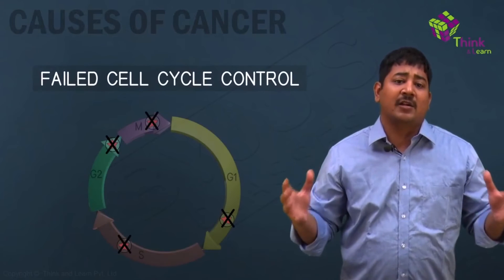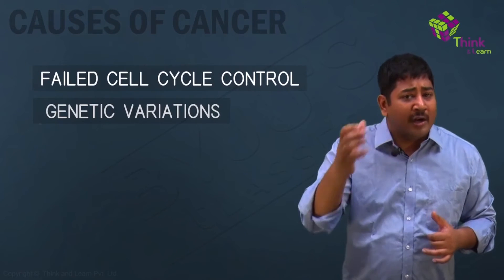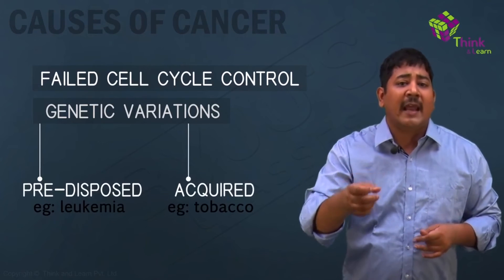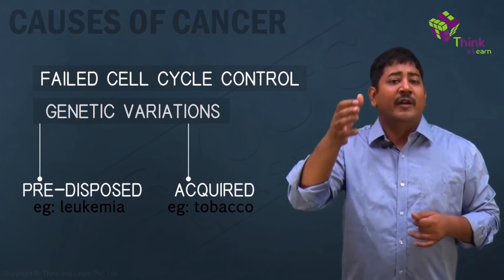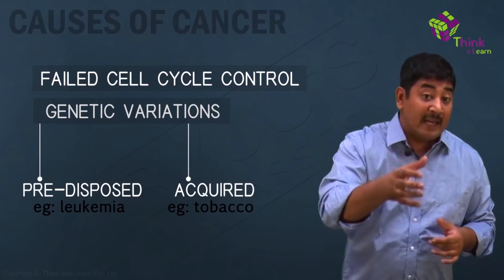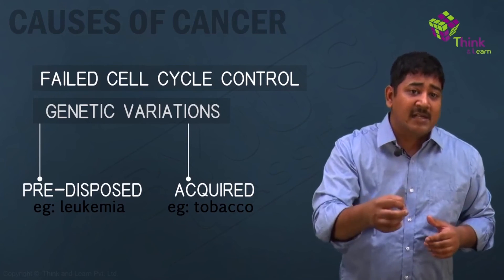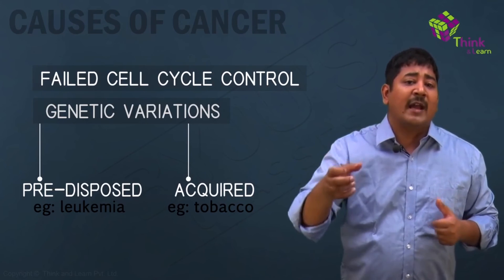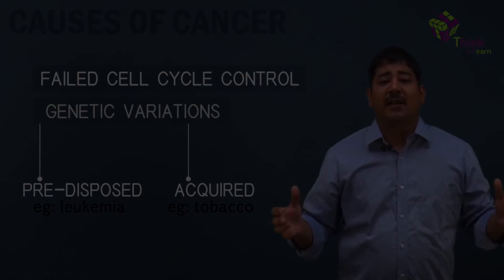Tumors are in fact a direct result of failed cell cycle control. In some cancers, genetic variations — either already present at birth or acquired through mutations in the DNA — lead to a breakdown in cell-to-cell communication and bypassing of cell cycle checkpoints as well as apoptosis checkpoints. As a result, cancer cells survive and divide perpetually, and over time this takes its toll on the body, leading to the individual's death.